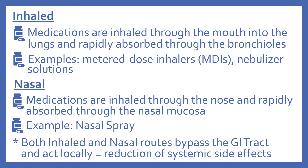Next is the inhaled route of administration. These medications are inhaled through the mouth into the lungs and rapidly absorbed through the bronchioles. Examples include metered dose inhalers or MDIs, and nebulizer solutions. There's also the nasal route of administration — medications inhaled through the nose and rapidly absorbed through the nasal mucosa, for example nasal spray. Both the inhaled and nasal routes bypass the GI tract and act locally, reducing systemic side effects.